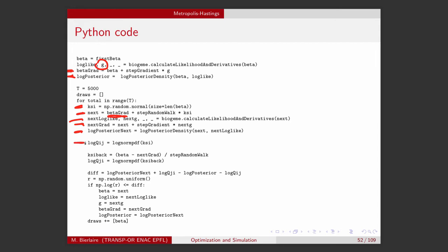The forward probability Q_ij is simply given by the normal PDF of xi. And again, I take the log. And here I calculate the backward probability using the formula that we have just seen.